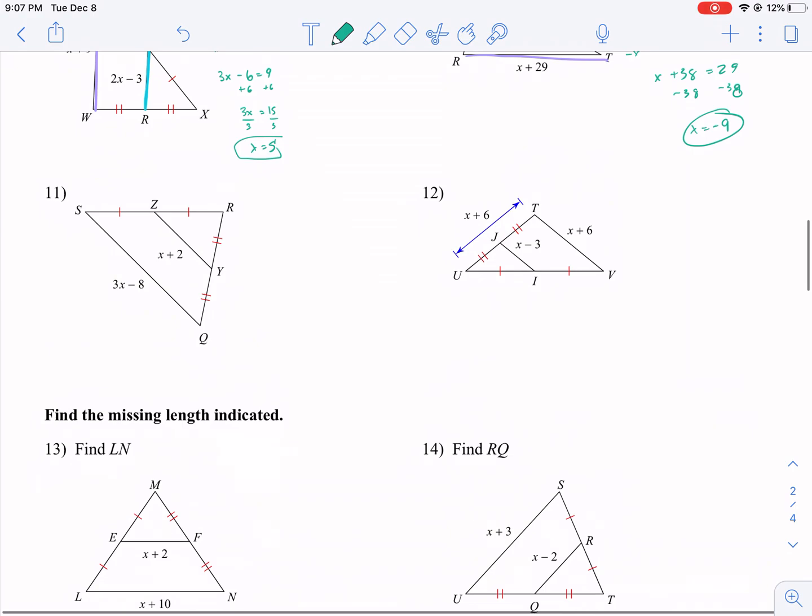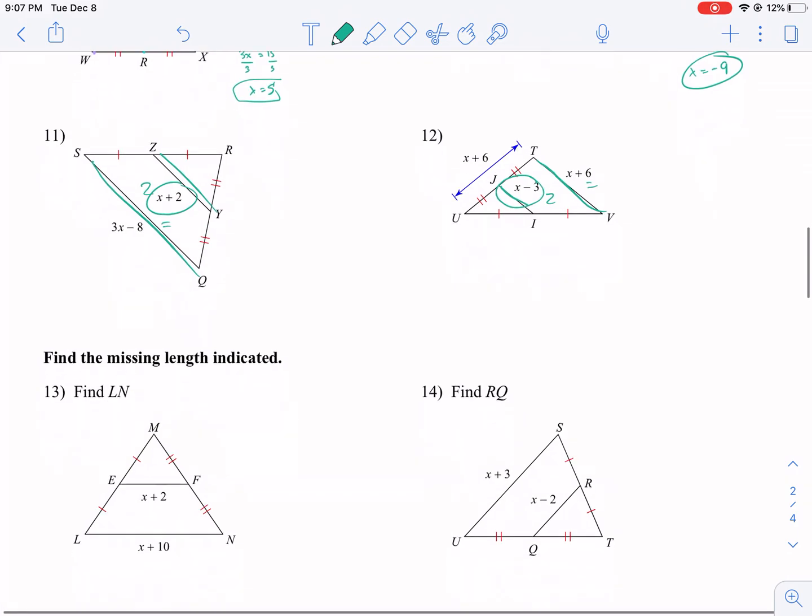We're going to skip these two just because it's the same thing. It's going to get boring if I keep doing the same thing. You're just going to say this guy times 2 equals that guy. This guy times 2 equals that guy. You get it?